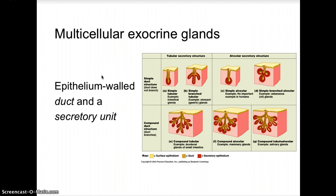Multicellular exocrine glands consist of epithelial tissue formed into a duct and a secretory unit. Here you can see simple duct structures where the ducts are not branched. Simple tubular structures are found in the intestinal glands. Branched tubular structures are found in the stomach, referred to as gastric glands. There are also acinar secretory structures — simple acinar has no important example in humans, but the simple branched acinar structure represents the sebaceous glands, or oil glands, of the skin.